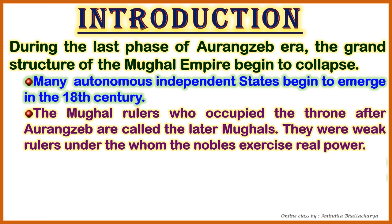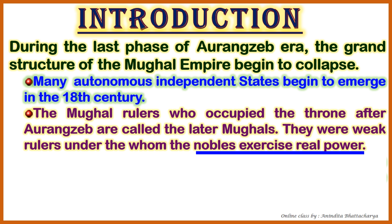The Mughal rulers who occupied the throne after Aurangzeb are called the Later Mughals. So after Aurangzeb's death, the emperors who came to the Mughal dynasty were called the Later Mughals. The problem was that they were weak rulers under whom the nobles exercised real power — the king was not strong or powerful, so the nobles under him were more powerful.